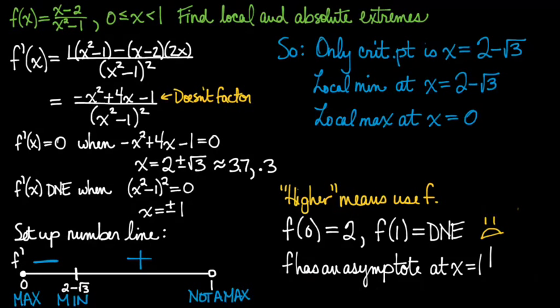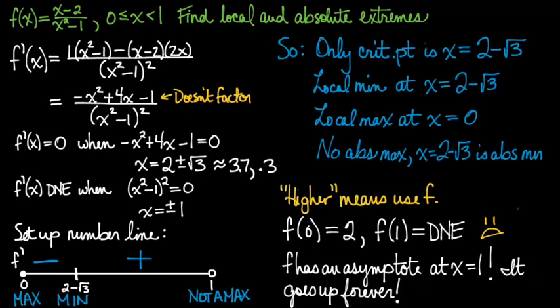So in a panic, I looked at f, and I realized that f has an asymptote at positive 1. This graph goes up forever as we approach positive 1, so of course there's no absolute max. We do have that absolute min, though, at 2 minus radical 3, and so this problem is complete. And in case you're curious,